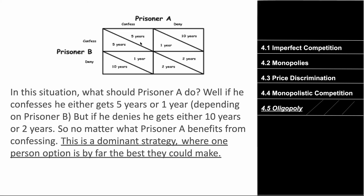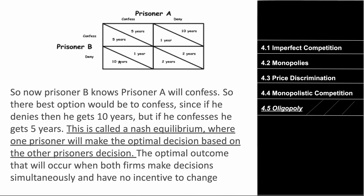Prisoner A had a dominant strategy — a strategy where one action yields an overall benefit regardless of what the other player does. For Prisoner A, confessing always resulted in fewer years. Nash equilibrium is where one player makes the optimal decision based on the other player's decision. Here, the Nash equilibrium is both prisoners confessing, which is their best case scenario given the other's action.